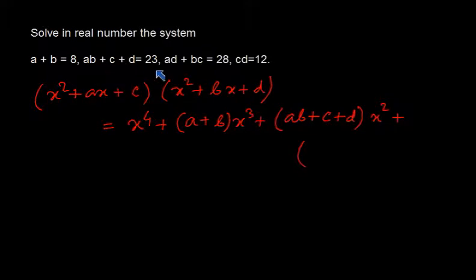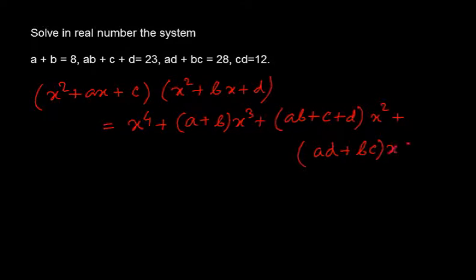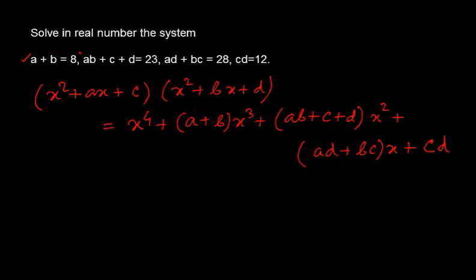For the X term, AX multiplied by D gives ADX, plus BCX, so it will be (AD + BC)·X. And the constant term is CD. So A+B, AB+C+D, AD+BC, and CD are becoming the coefficients. This is the plan here.